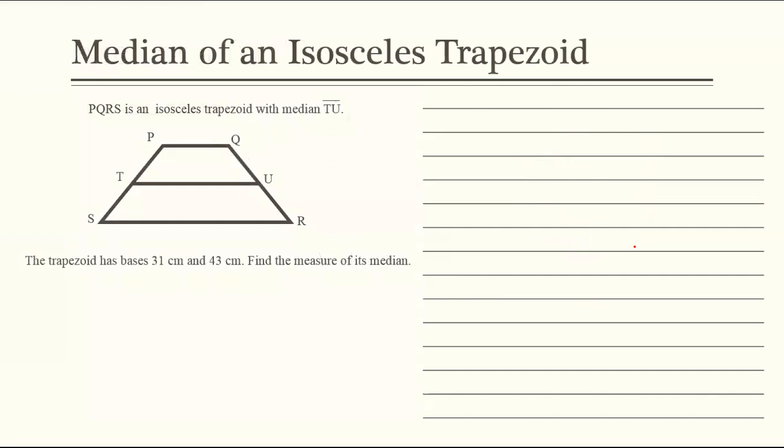Next. Dito naman tayo sa median of an isosceles trapezoid. Ang formula lang po ng pagkuhan ng median ay, median of a trapezoid is equal to B1 plus B2 over 2. Ano ba yung B1? So B1 po natin yung upper base and then B2 natin yung lower base. Yung base po, upper and lower base. And by the way, ang median po, yung end points po nila ay nasa middle point. Nasa gitna po.